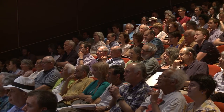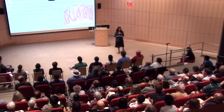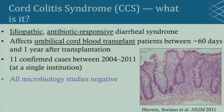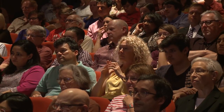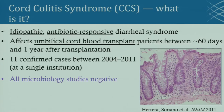The disease I decided to study was exactly that mystery case: cord colitis syndrome. It was an idiopathic antibiotic-responsive diarrheal syndrome affecting only patients who had undergone umbilical cord blood stem cell transplants between 60 days and one year after transplantation. There were 11 confirmed cases over seven years at a single institution, suggesting this wasn't just a big outbreak. All microbiology studies were negative, yet there was evidence of infection when looking at colon cross-sections under a microscope. This seemed like a mystery infection to me.